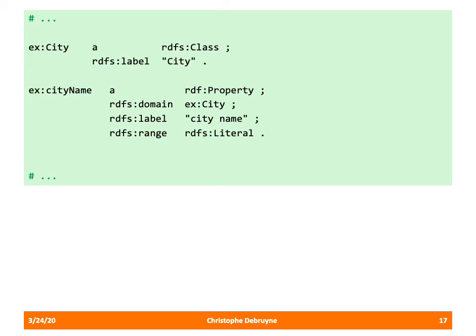The implementation of city is similar — essentially copy-pasting the person statements and replacing occurrences of person with city. So we have a class city with a label, and a property city_name with domain city, range literal, and the label 'city name'.